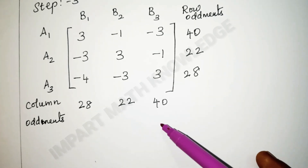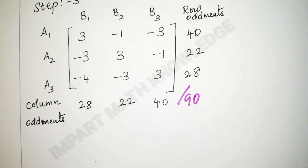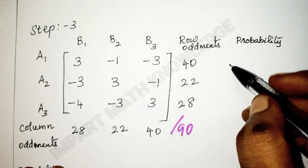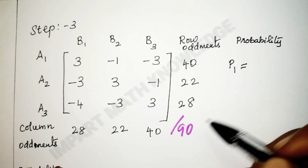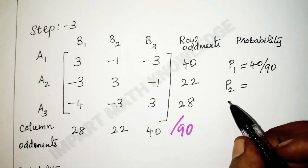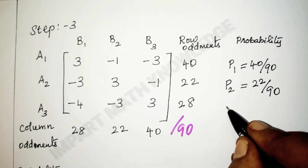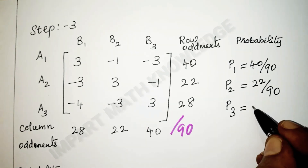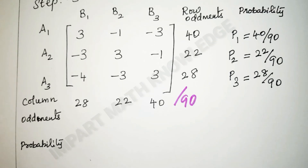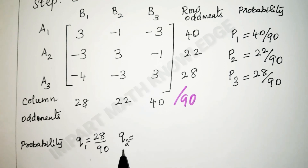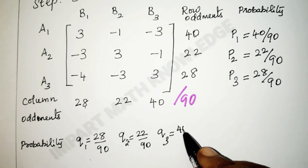The row oddments total and column oddments total are always equal — here the total is 90. Probability for strategy A1: P1 = 40/90. Probability for A2: P2 = 22/90. Probability for A3: P3 = 28/90. For player B: probability for B1 = 28/90, B2 = 22/90, and B3 = 40/90.